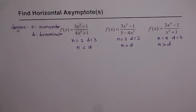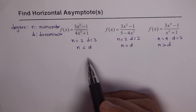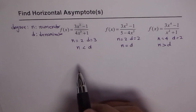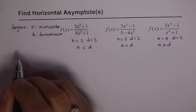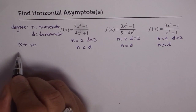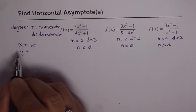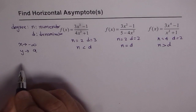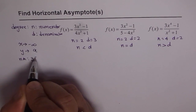Only three cases are possible. It does not really matter by how much the degree is higher or lower. Now, a horizontal asymptote describes the behavior of a curve when x approaches positive or negative infinity. Basically, if x approaches minus infinity and y approaches a value — let's say it approaches the value a — then we have a horizontal asymptote and the equation will be y equals a.